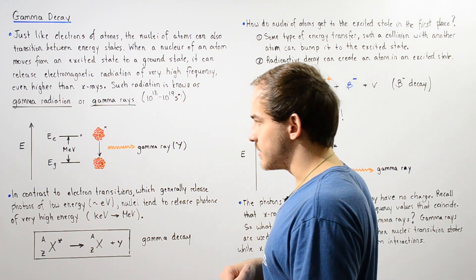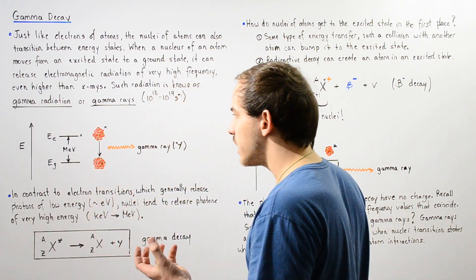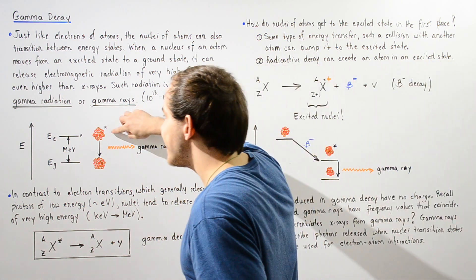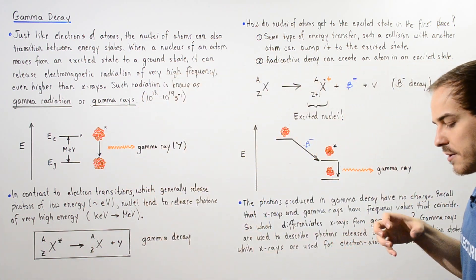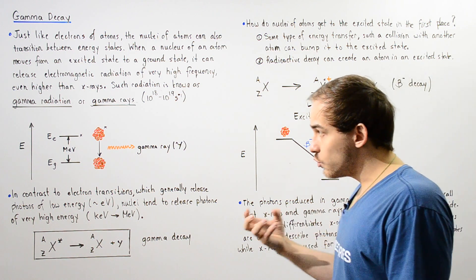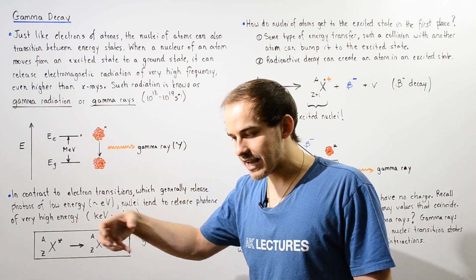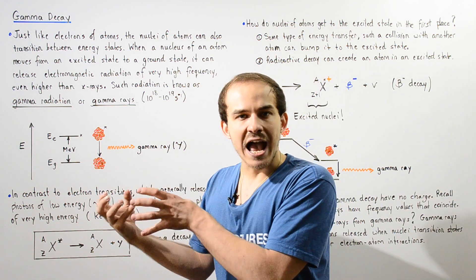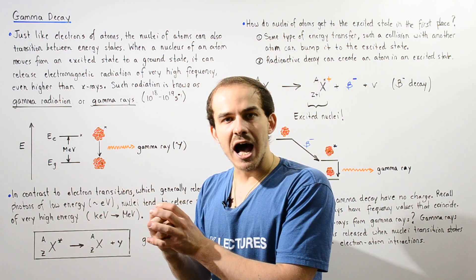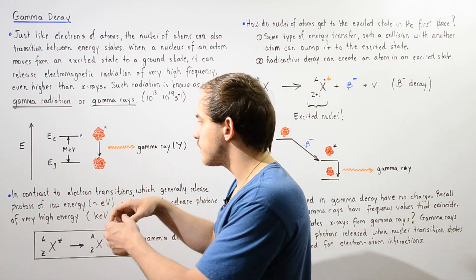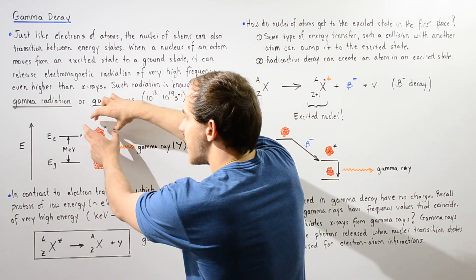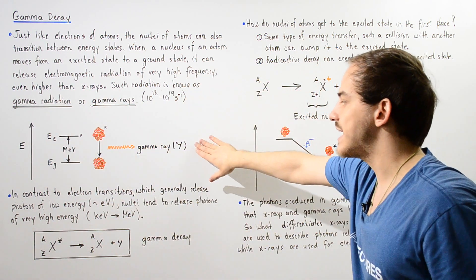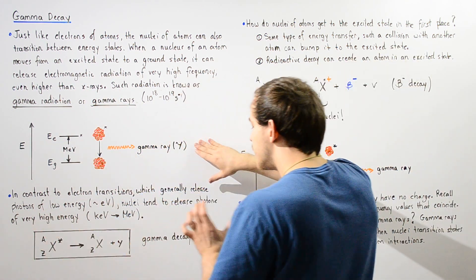How exactly does the nucleus of an atom get to the excited state in the first place? There are many ways by which a nucleus can reach the excited state. One way is by a violent collision with another atom. If they collide and enough energy is transferred, the nucleus can jump to the higher state, and when it jumps back, it releases a gamma ray and undergoes gamma decay.